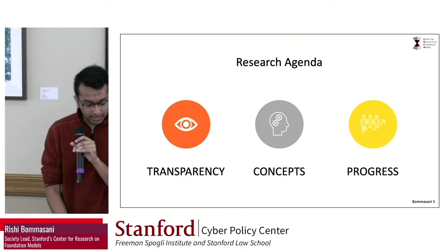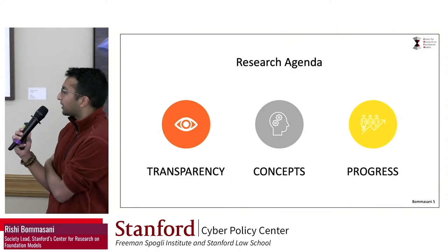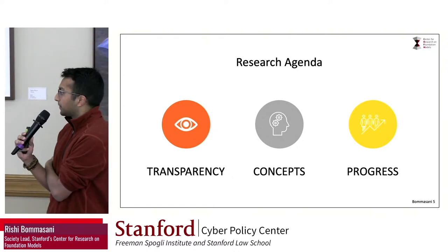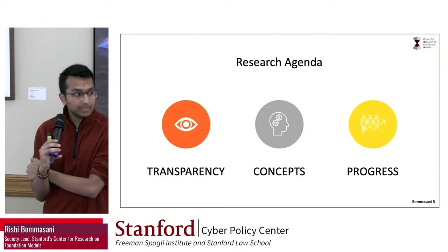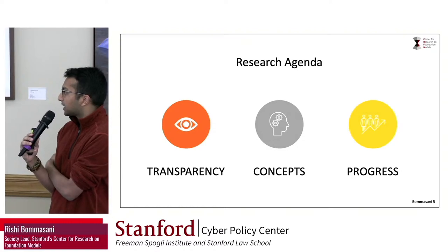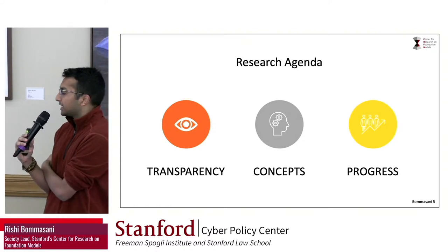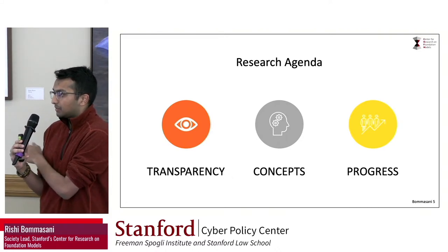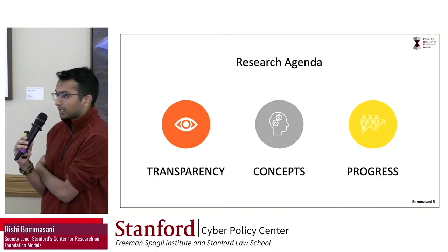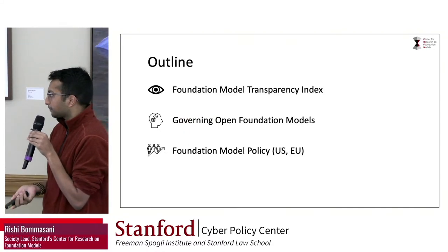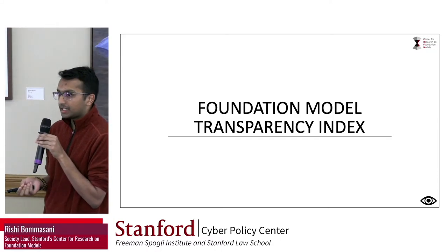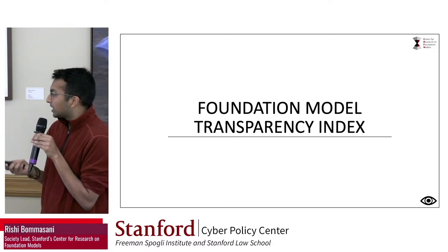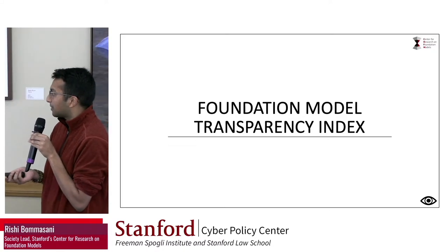My work addresses a few different things, but for the purpose of this talk I've organized it into three categories. First, my work tries to establish a baseline level of understanding and transparency of what is going on. On that basis, I introduce some new concepts important for reasoning about this new technology. And ultimately, the main focus of this talk, I think about how we can improve the status quo in society, including through policy. On the first front I'll talk about our work on transparency, in particular one line of work on the transparency index, which is motivated by work that has already happened in social media transparency.